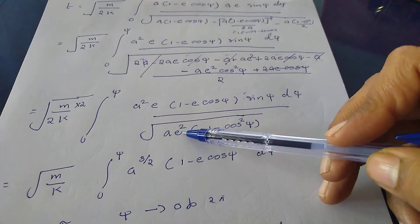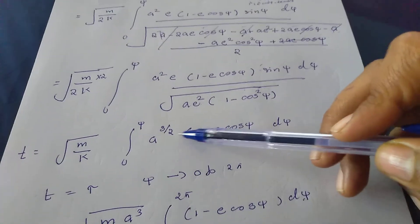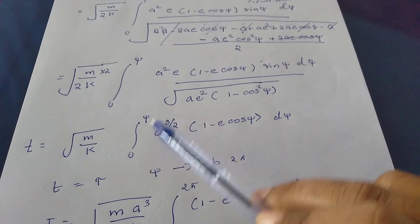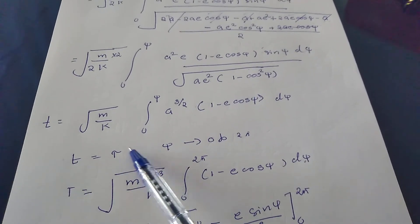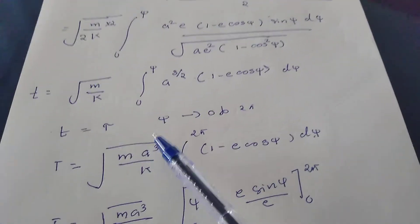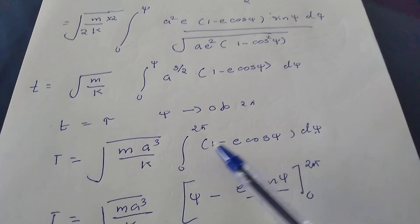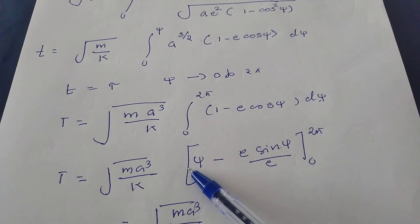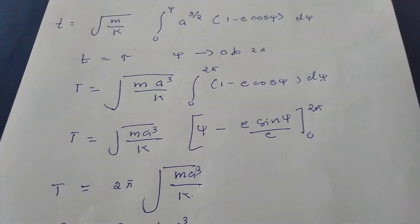The result simplifies to: t equals a to the 3/2 times square root of m by k times the integral from 0 to psi of (1 minus e cosine psi) d psi. For a complete revolution, t becomes the period tau and psi goes from 0 to 2pi. Substituting: tau equals square root of ma cubed by k times the integral from 0 to 2pi of (1 minus e cosine psi) d psi. Integrating gives [psi minus e sine psi] with limits applied: 2pi minus 0, and since sine of the limits is 0, this gives tau equals 2pi times square root of ma cubed by k.